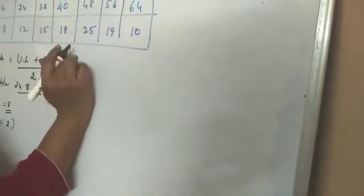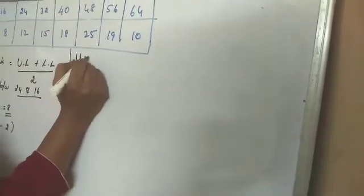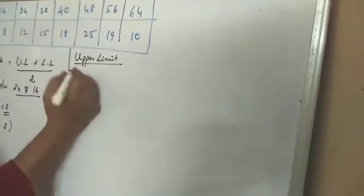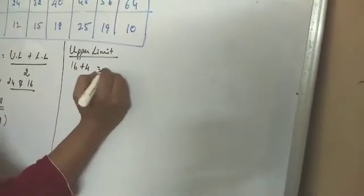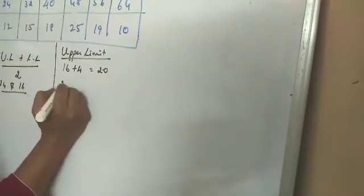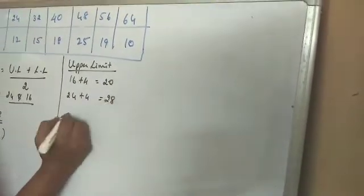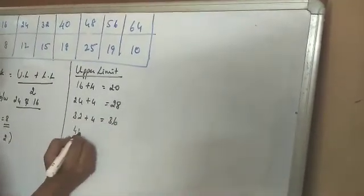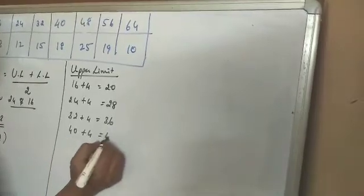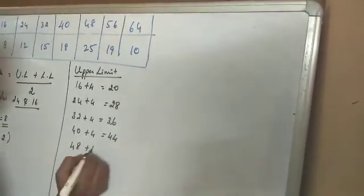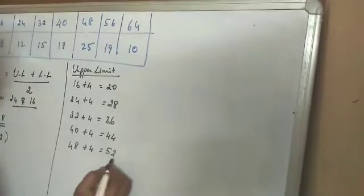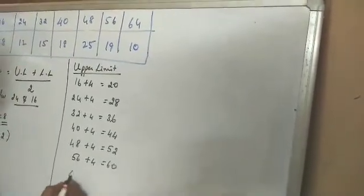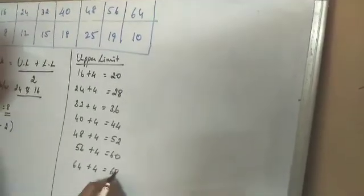Now upper limit: 16 plus 4, you will get 20. 24 plus 4, you will get 28. 32 plus 4, you will get 36. 40 plus 4, 44. 48 plus 4, 52. 56 plus 4, 60. 64 plus 4, you will get 68.